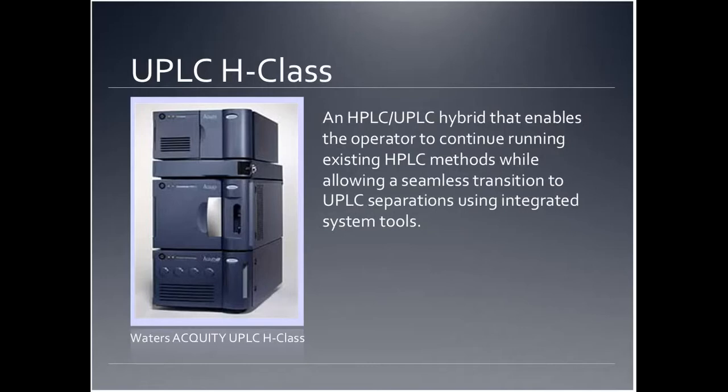New advancements in liquid chromatography have encountered some problems along the way. Many scientists used to traditional HPLC methods find it hard to make the switch to the faster UPLC method. A recent technology we have in our lab is a hybrid HPLC and UPLC model called the UPLC H-Class, designed to replace HPLC systems and accelerate the adoption of UPLC among HPLC users. We are lucky to have one UPLC H-Class in our lab.